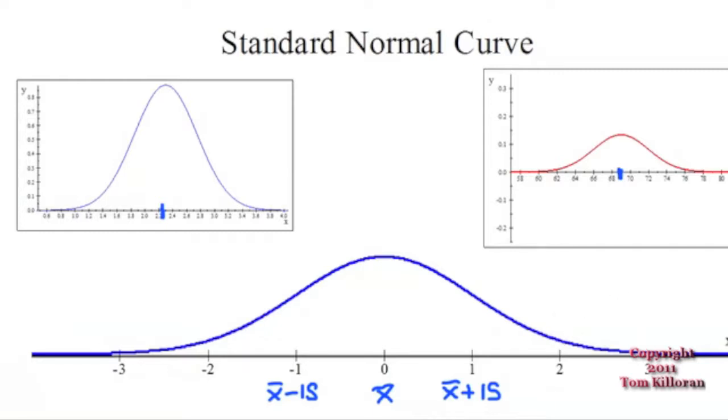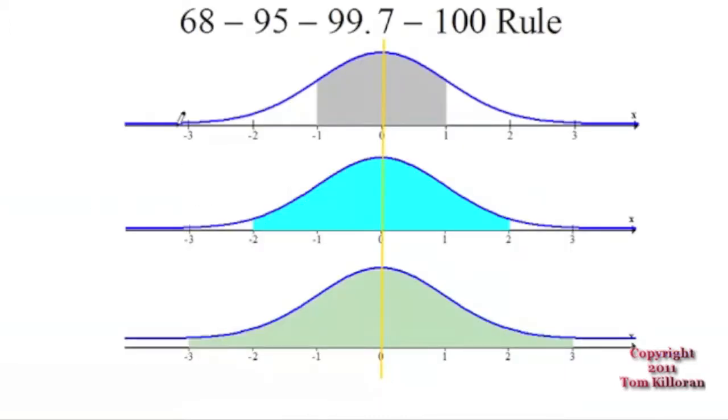There's some facts that's known about this standard normal curve, and one of those facts is a 68-95-99.7 rule. Don't forget that the whole curve is 100%, so I put the 100 there at the end. A lot of people think it's just the first three numbers.